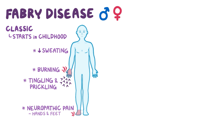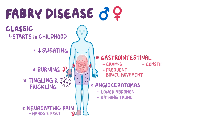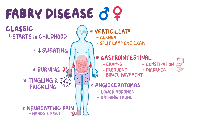In some people living with Fabry disease, small reddish-purple rashes called angiokeratomas appear around the lower abdomen and bathing trunk region of the body. There may also be gastrointestinal symptoms like cramps, frequent bowel movement, constipation, and diarrhea. Many patients have a whorl or verticillata in their cornea that can be found during a slit-lamp eye exam, but it doesn't typically affect vision.